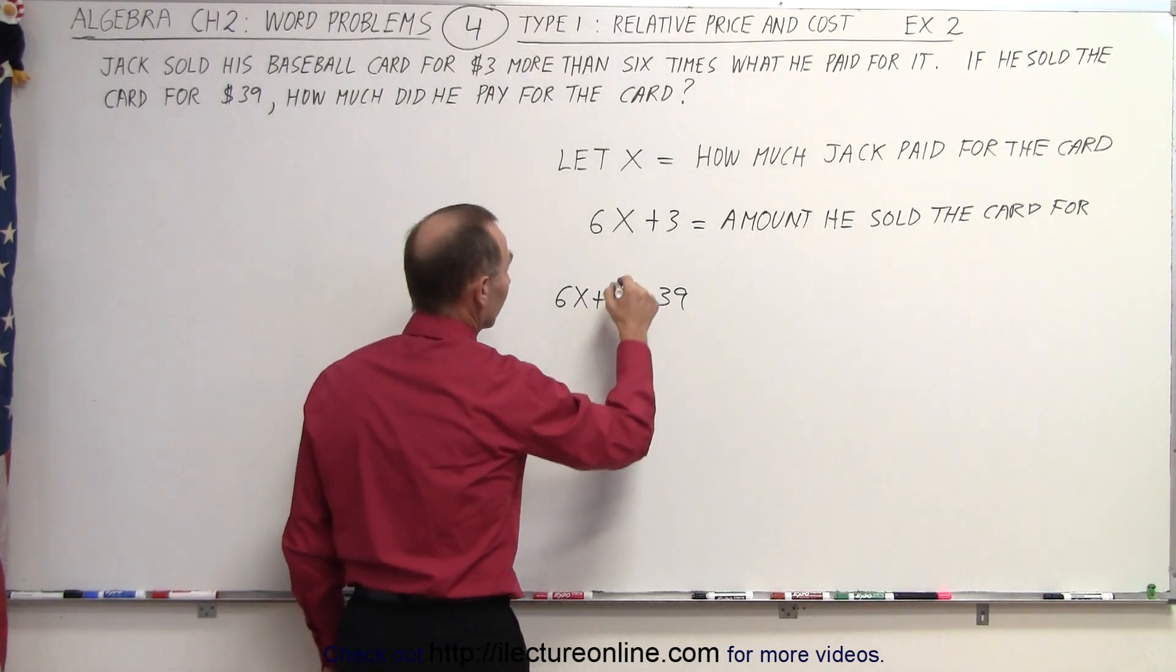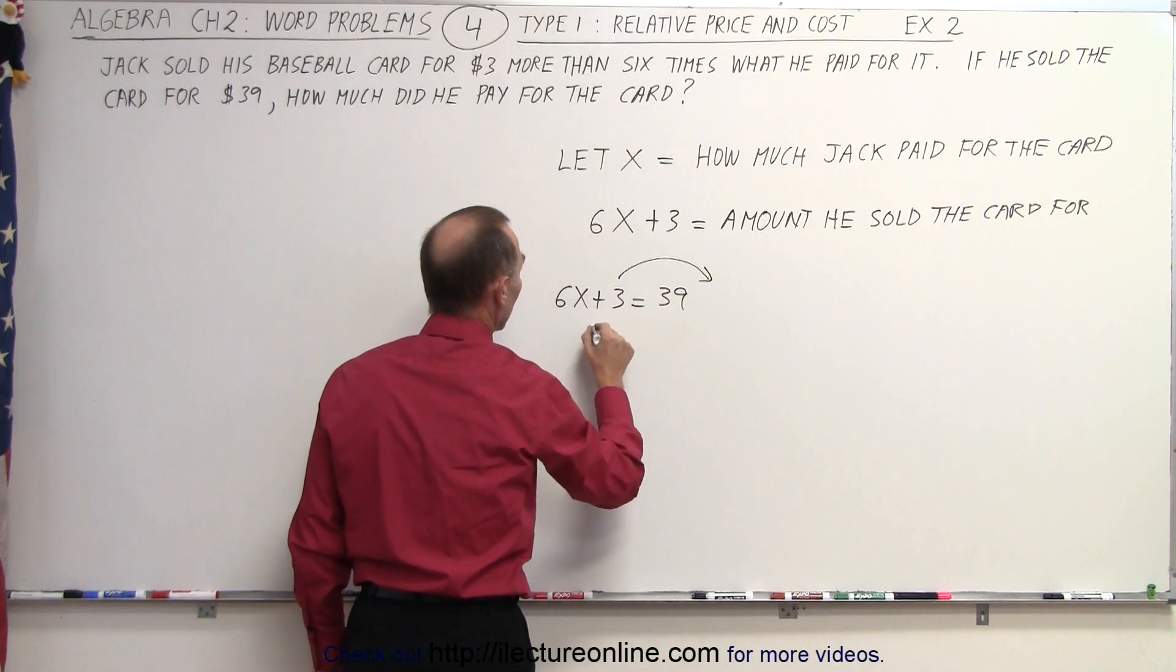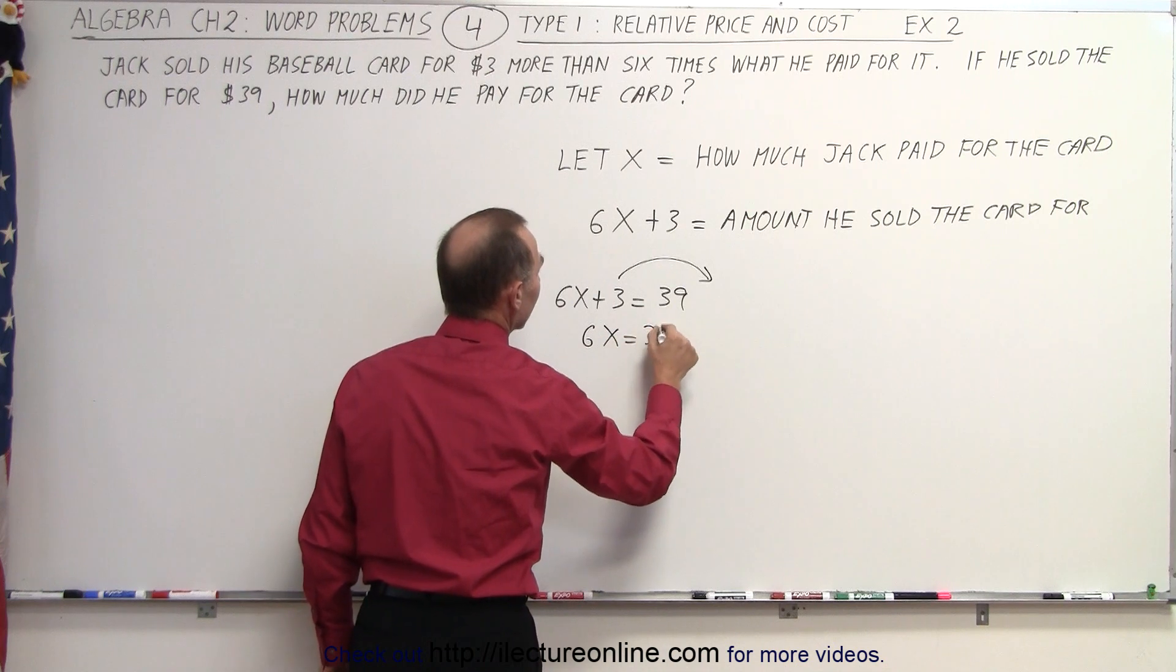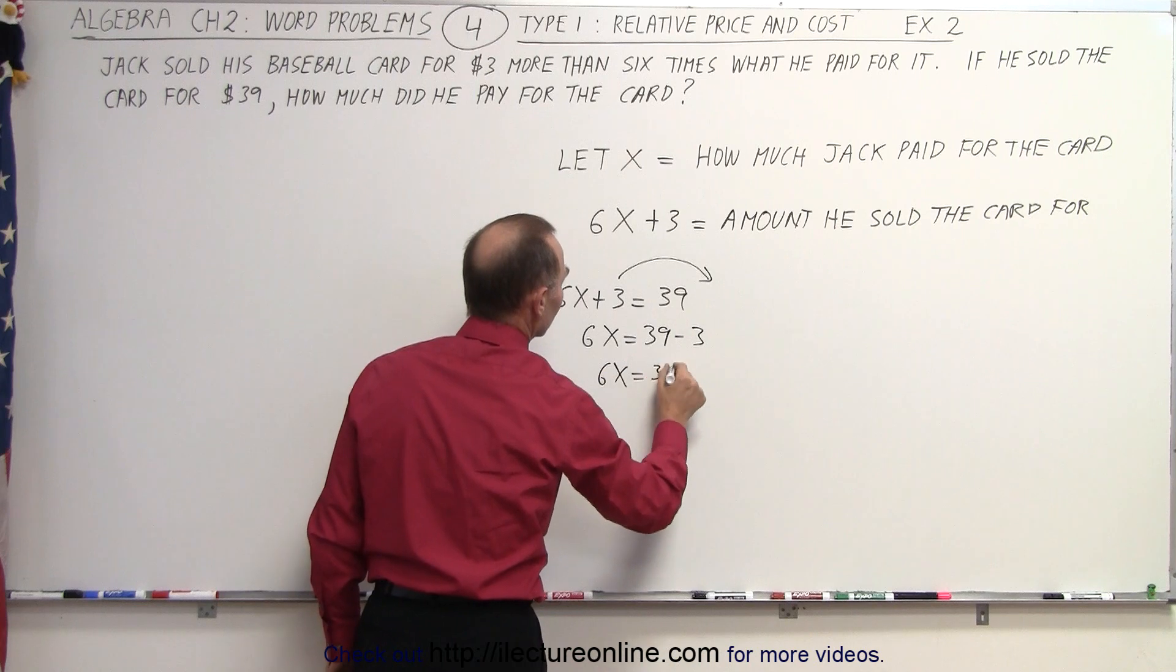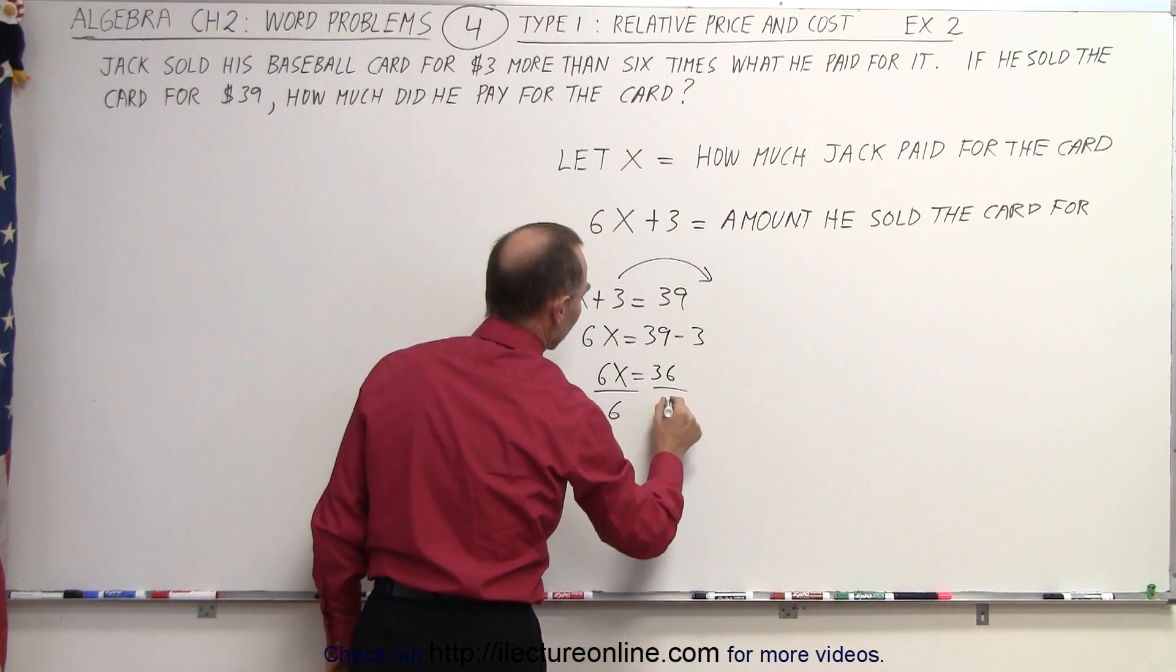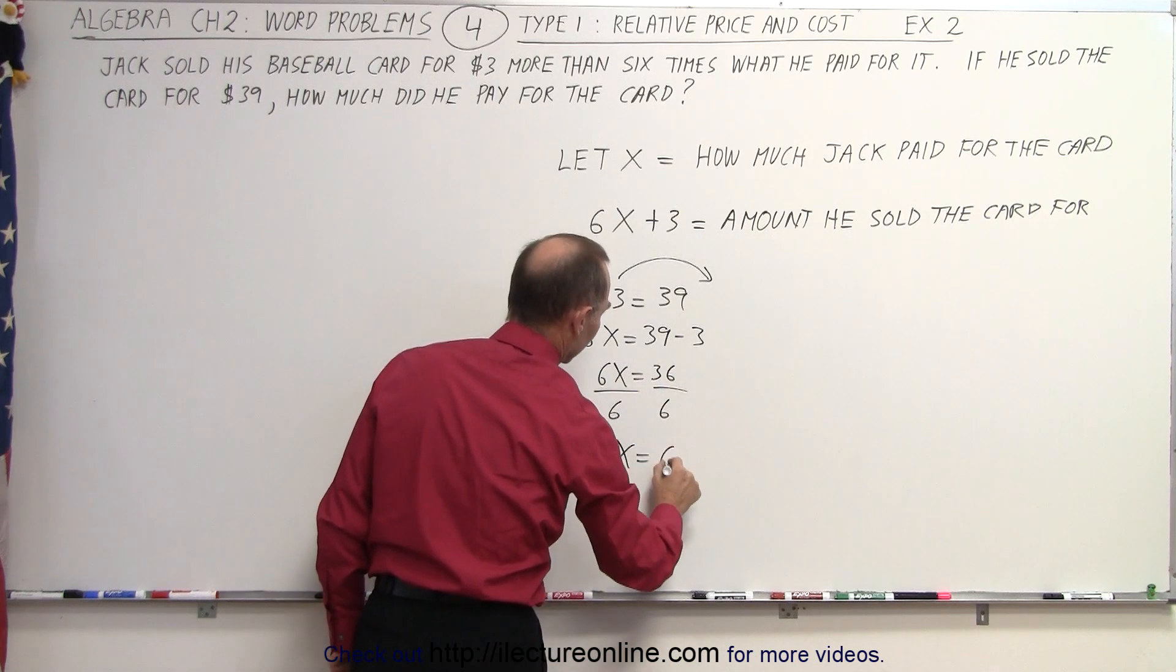Now let's solve for X. We move the 3 over to the other side. We get 6X equals 39 minus 3 because we changed the sign. 6X equals 36. Divide both sides by 6, we get X equals 6.